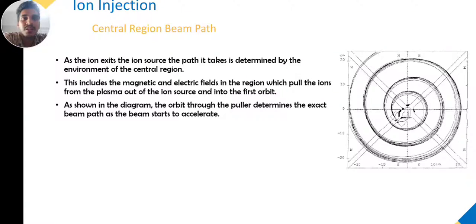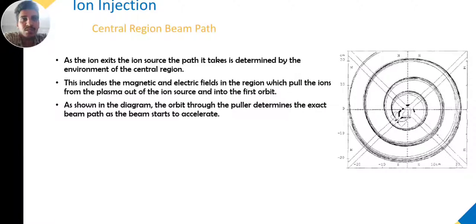For ion injection, one method involves the central region beam path. As the ion exits the ion source, the path it takes is determined by the environment of the central region, including the magnetic field. This region pulls the ions from the plasma out of the ion source and into the first orbit. As shown in the figure, the orbit through the puller determines the exact beam path as the beam starts to accelerate.